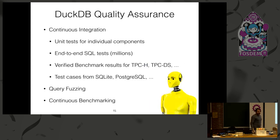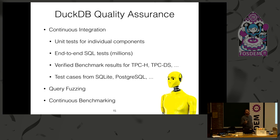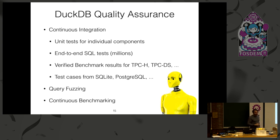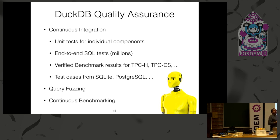That's why I want to briefly talk about our quality assurance with DuckDB. We have continuous integration running with millions of SQL queries executed on every single release, and we know the correct result for every one of those queries, so anything wrong is instantly flagged. We have verified benchmark results for large standard benchmarks that we also check. We went around and stole everyone's test cases — because SQL engines all share the same query language, you just need a parser for their result format. We even scraped the SQL Server website for example queries with answers to generate test cases. We also do query fuzzing to auto-generate queries and try to break our system, and we have continuous benchmarking to flag performance regressions quickly.